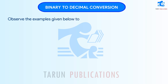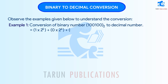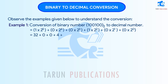Observe the examples given below to understand the conversion. Example 1: Conversion of binary number 100100 base 2 to decimal. Is equal to 1 times 2 to the power 5, plus 0 times 2 to the power 4, plus 0 times 2 to the power 3, plus 1 times 2 to the power 2, plus 0 times 2 to the power 1, plus 0 times 2 to the power 0. This equals 32 plus 0 plus 0 plus 4 plus 0 plus 0, which is equal to 36.